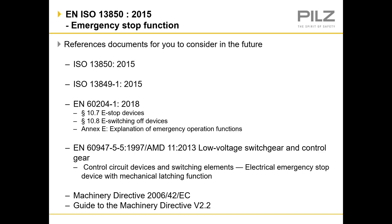The guide to the machinery directive version 2.2 is a really useful guide. It contains over 400 pages covering the machinery directive with clear explanations for guidance and interpretation, so I'd strongly recommend that you download a copy of that.